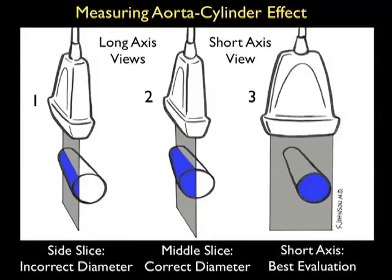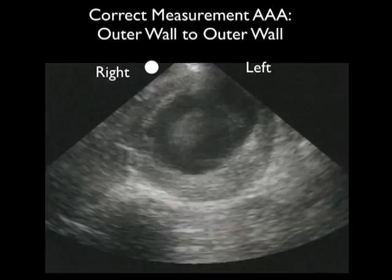A better orientation is to position the probe in the short axis configuration, as shown in probe position three. One can then get a sense of the true lumen and obtain the best measurements of the abdominal aortic aneurysm.